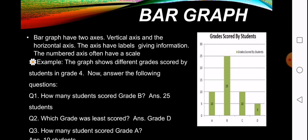Now next, see the bar graph. This bar graph has two axes: vertical axis and horizontal axis. The axes have labels giving information. The numbered axes often have a scale. Example: the graph shows the different grades scored by the students of grade 4.